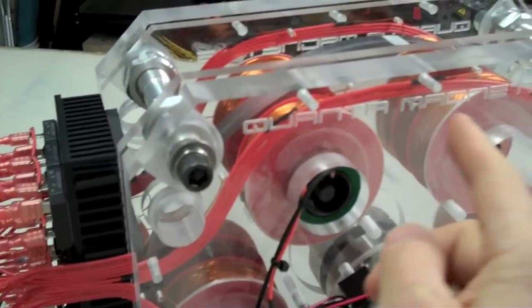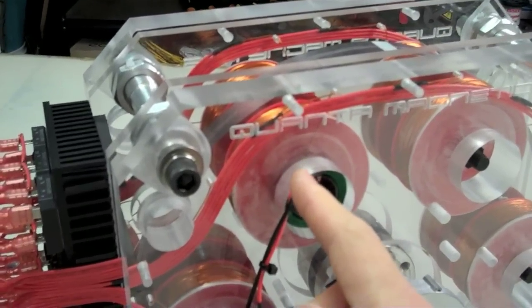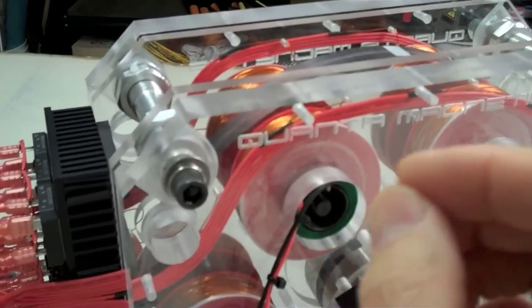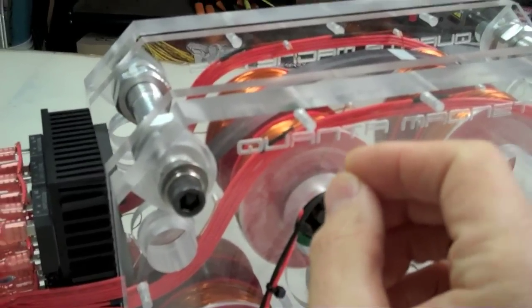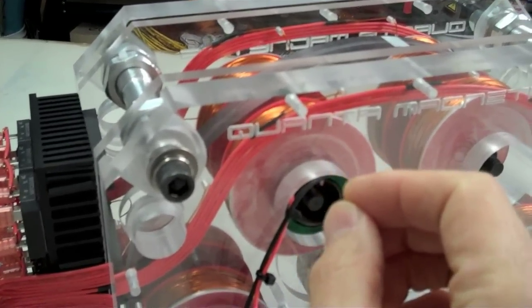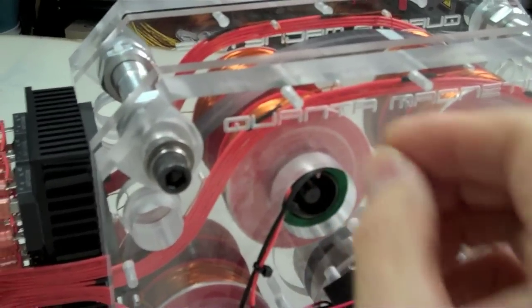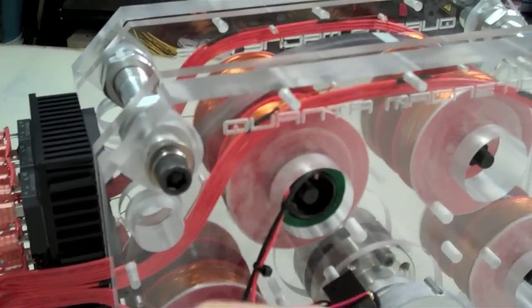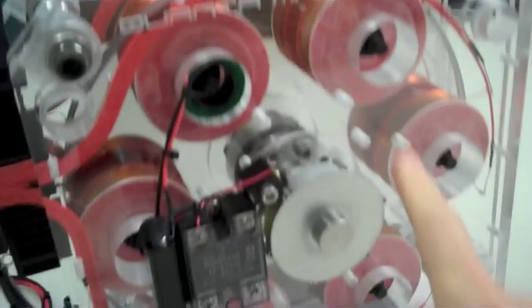So every time that magnet hits top dead center, that thing pulses a double repulsion. North on north, south on south, and it shoots that magnet out like a bullet, times six.